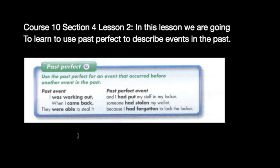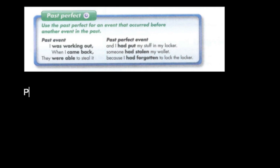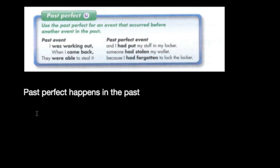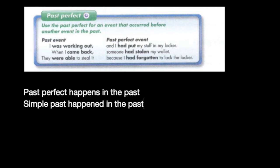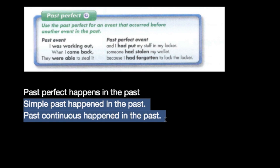One way to understand past perfect is plain and simple: past perfect, simple past, and past continuous all happen in the past. So what is the difference between them? Past perfect happens before another activity in the past — that's the key distinction.